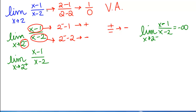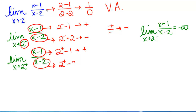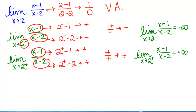Using similar reasoning as we approach 2 from the right: a number close to 2 minus 1 is close to 1, so it's positive. A number a little bigger than 2 minus 2 still leaves a positive remainder. A positive number divided by a positive number is positive. Since the only choices are positive or negative infinity, the right-side limit is positive infinity.